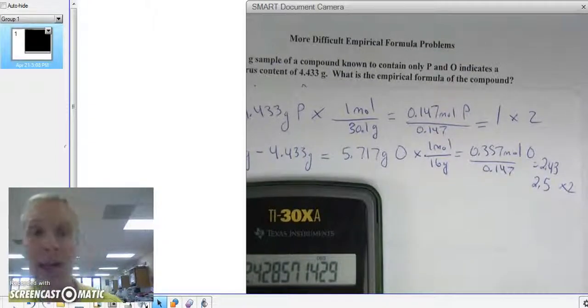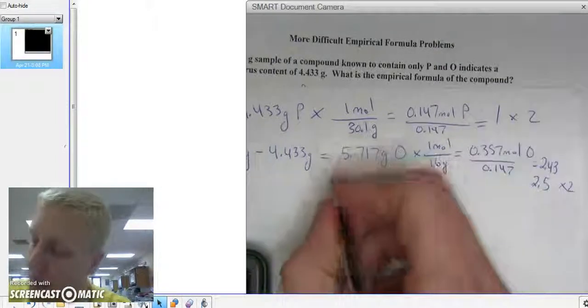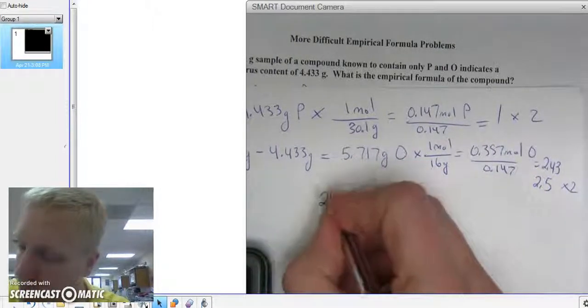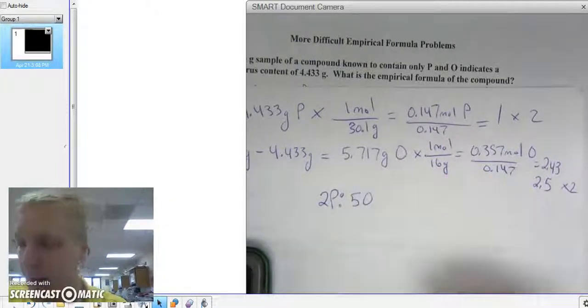If not, then I'll try 3. If that doesn't work, I'll try multiplying by 4. So 1 times 2 is 2, so that's 2 phosphoruses. And then 2.5 times 2 is 5 for every 5 oxygens.